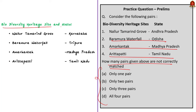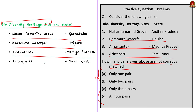Solving the question on Biodiversity Heritage Sites and states: Nallur Tamarind Grove is in Karnataka (not Andhra Pradesh), Baramura Waterfall is in Tripura (not Odisha), Amarkantak is in Madhya Pradesh (correct), and Aritapatti is in Tamil Nadu (correct — it is the first Biodiversity Heritage Site of Tamil Nadu). The first and second pairs are incorrect. Since the question asks for incorrect pairs, the answer is option B — only two pairs.